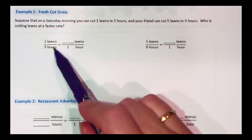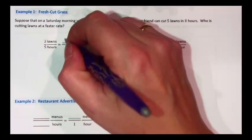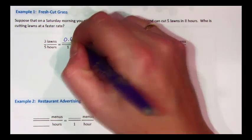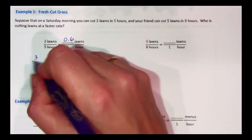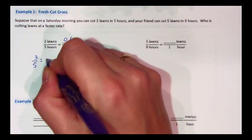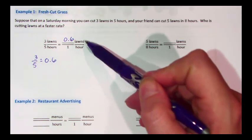Here, to find the unit rate, we're going to divide three by five. If we do this on a calculator, we get six-tenths. If we leave it as a fraction, it's three-fifths. Three-fifths is the same as six-tenths. Either way, it's lawns per hour.